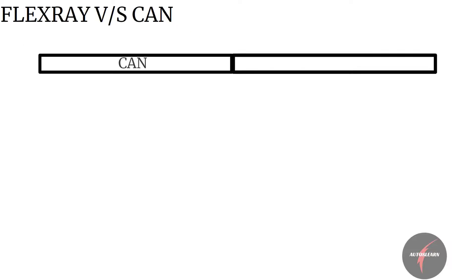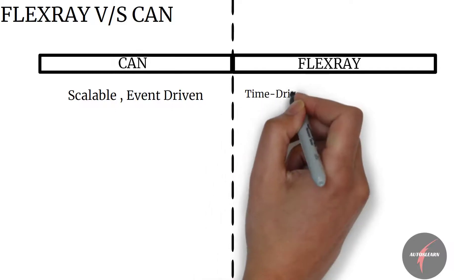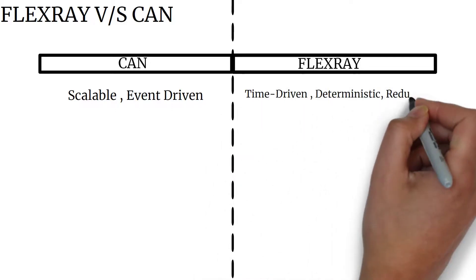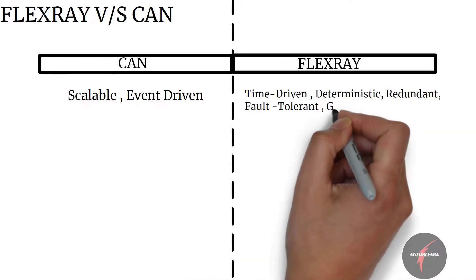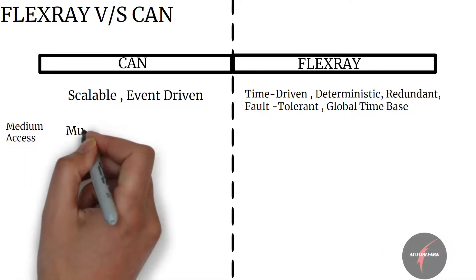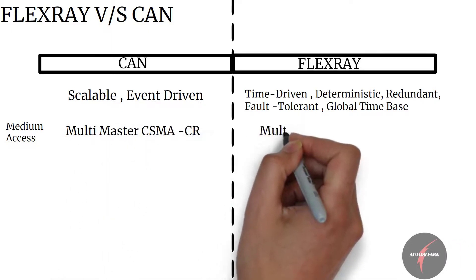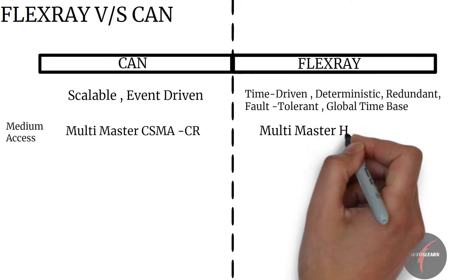Let's compare few aspects of FlexRay and CAN. CAN is scalable event-driven while FlexRay is time-driven deterministic redundant fault tolerant global time base. Let's look into media access control. CAN is multi-master CSMA-CR while FlexRay is multi-master hybrid TDMA.